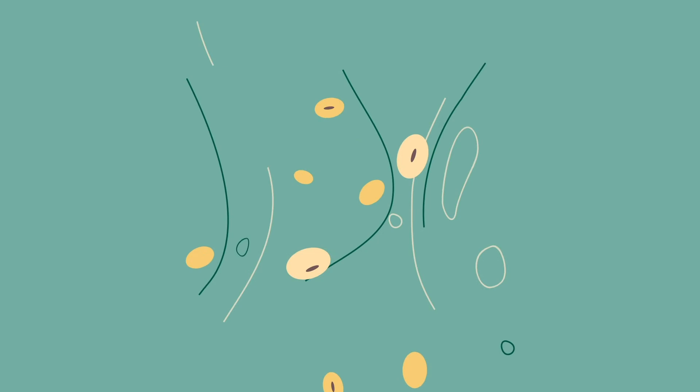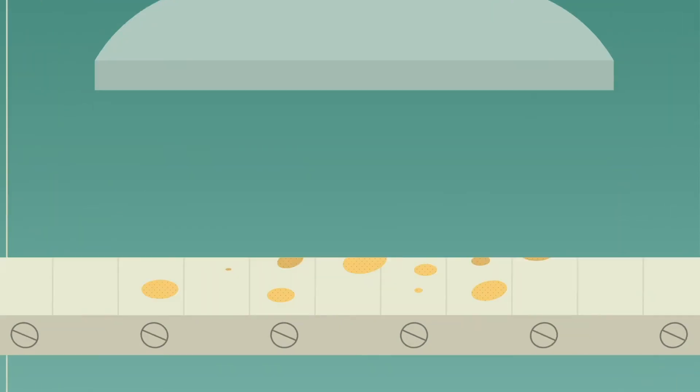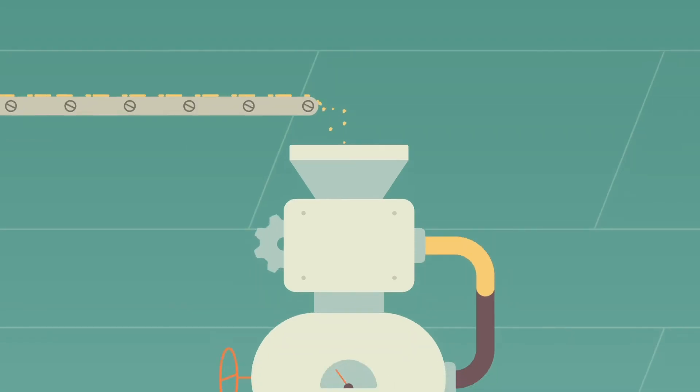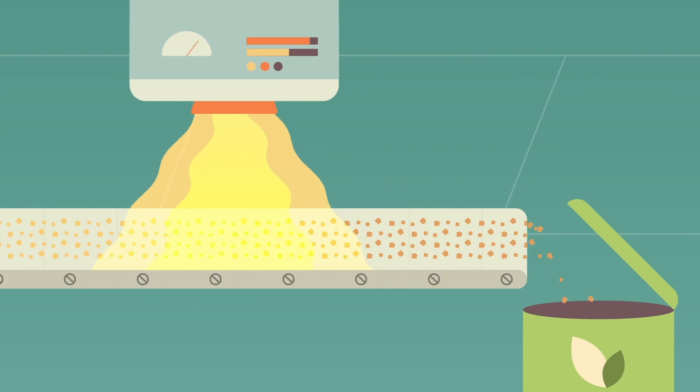This complex process cleans, cracks, and dries the seeds before being flattened into flake. Some of the flake is stripped, distilled, and refined into oil and the rest is toasted and dried to become meal.